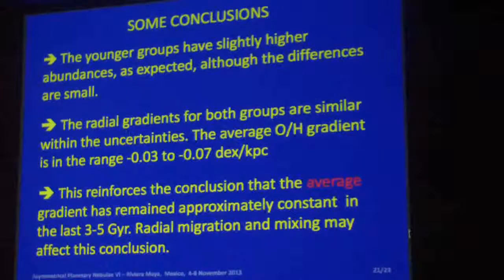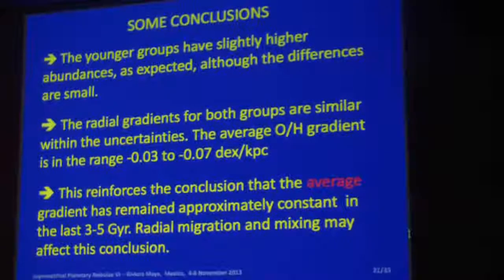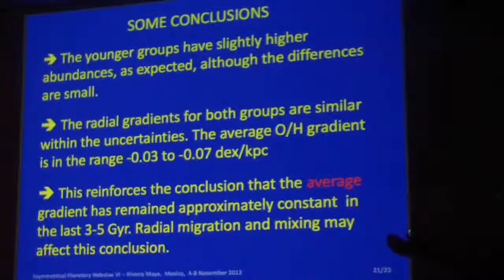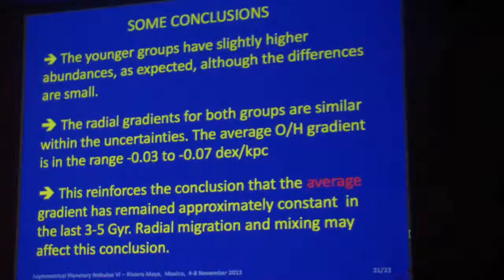You have noticed, no doubt, all the samples are relatively small, even sample A. I agree that we really need better distances in order to get this to another level. The main conclusion is that the gradient has been approximately constant in the last 2-5 gigayears. Why 2-5 gigayears? Because that is the maximum age of the age distribution.